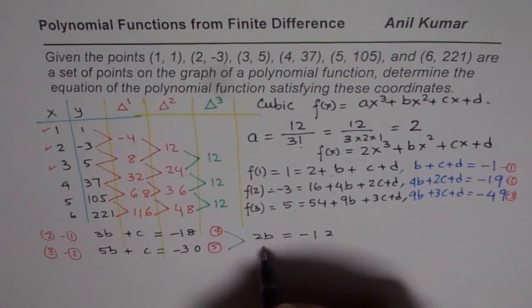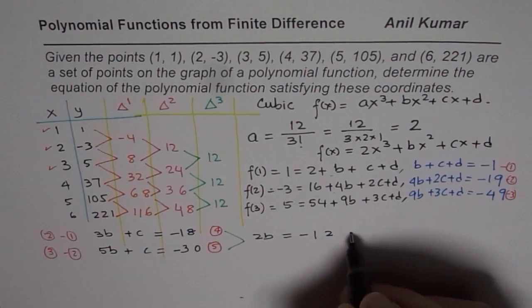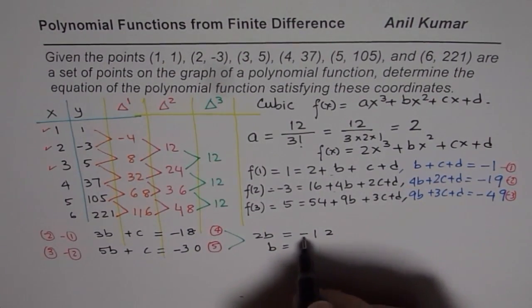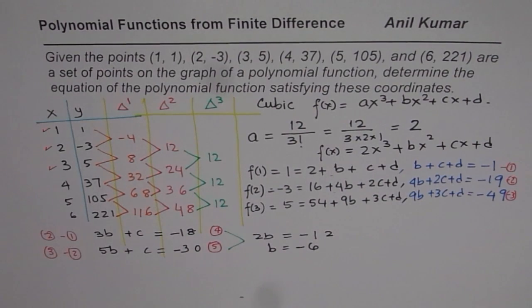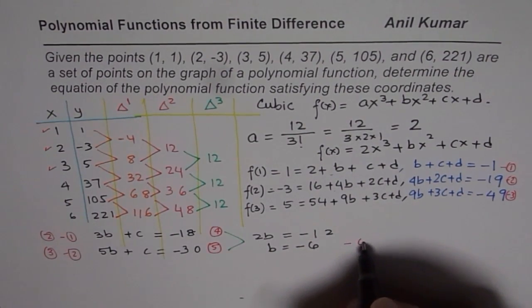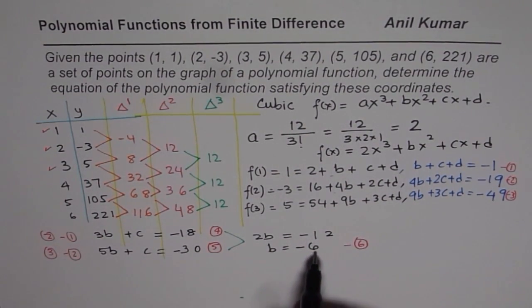That gives us a value of b equals -12 divided by 2, which is -6. So we get a value of b as -6. And I will write this value of b as equation number 6.